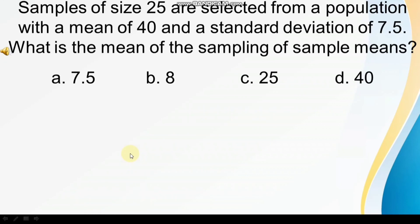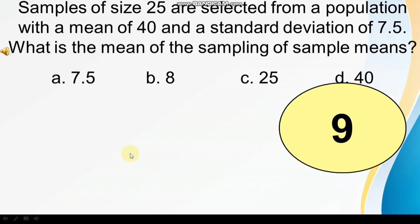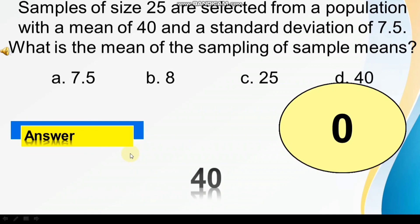So, the final answer is in 10, 9, 8, 7, 6, 5, 4, 3, 2, 0. Okay, so the final answer is 40. Why? Because the population mean is always equal to the mean of the sampling distribution of the sample means. That is the property of a normal distribution.